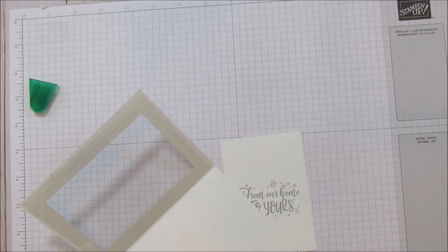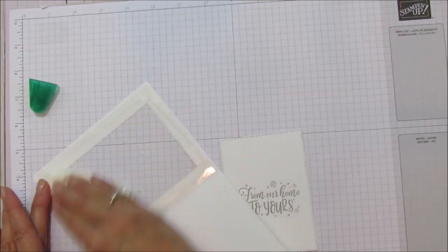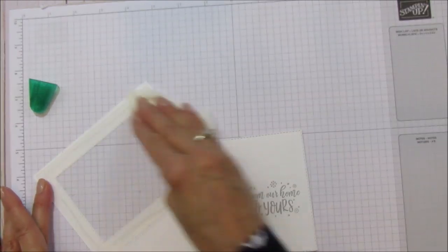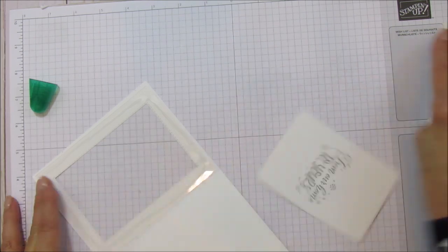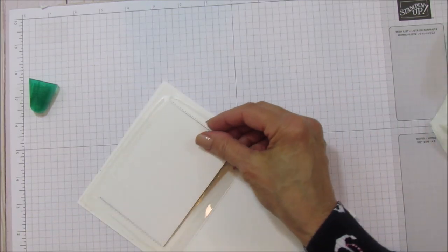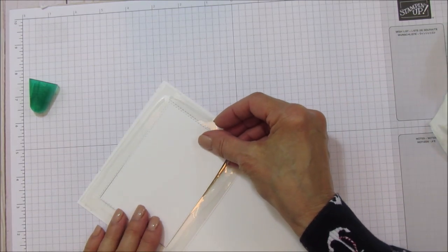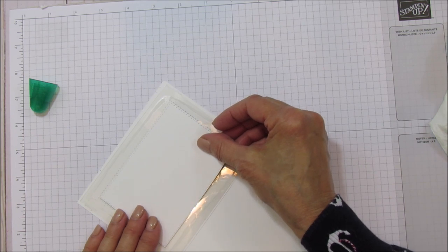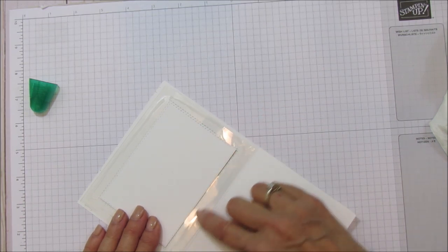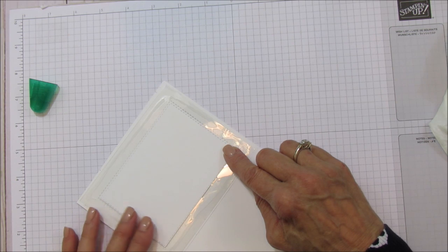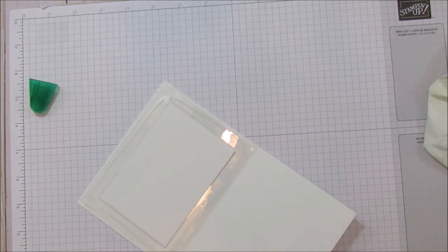I did add a wink of Stella to this, we're going to do that after. Now to get this centered in this piece here it's going to be really easy, I'll show you that. I want to make sure this is all clear. So what you're going to do is you're just going to lay this on top.